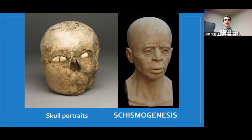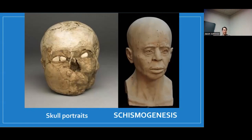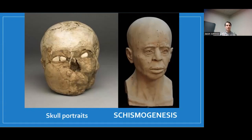What Graeber and Wengrow want to persuade us of is that this was a process of schismogenesis: the uplanders doing their trophy head hunting, predation, and violent hierarchical practices, while the lowlanders were doing strange things with skulls too, but in an opposite way — skull portraits rather than bare trophies. These two areas were very linked by trade and interconnection, but there seem to have been deliberately different things going on.